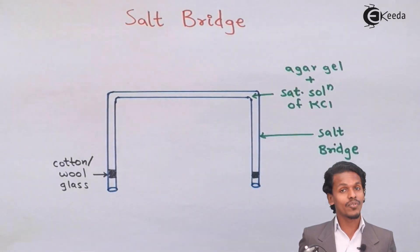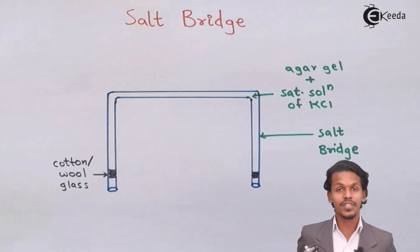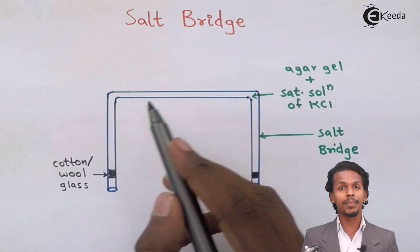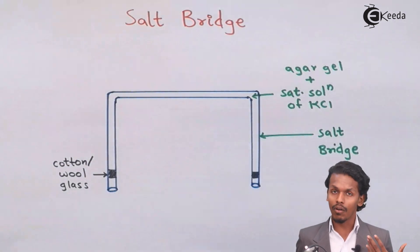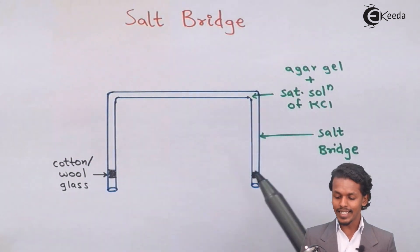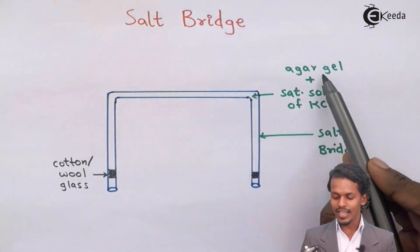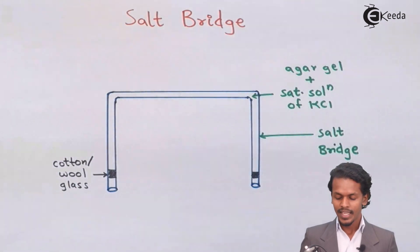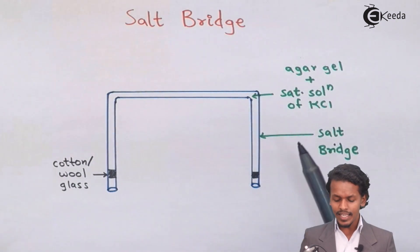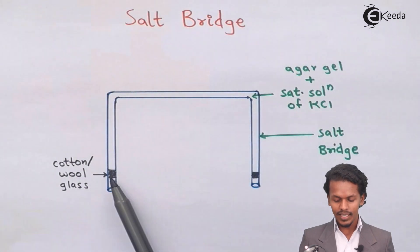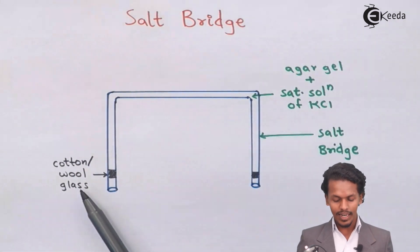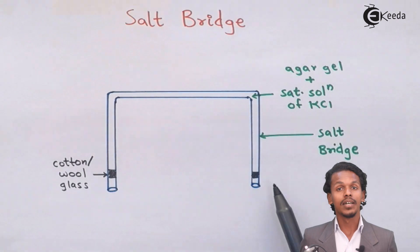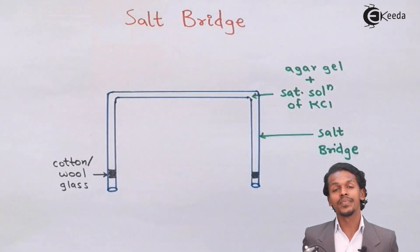As shown on the screen, I have drawn a diagram of a salt bridge. It is a U-shaped hollow glass tube which contains agar gel and a saturated solution of KCl. Cotton wool plugs are present at the tips of the salt bridge.